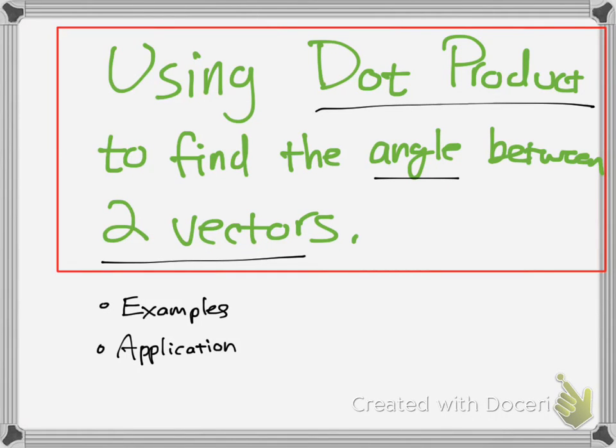Hello YouTube. Today we're going to be talking about using dot product to find the angle between two vectors. So if you want to know at what angle something is happening between the two vectors, this is how we're going to be talking about that. I'm just going to go over some examples and an application that I thought was really cool.